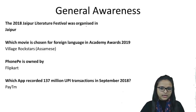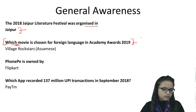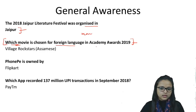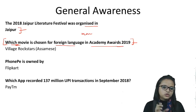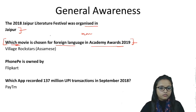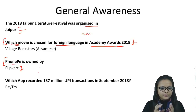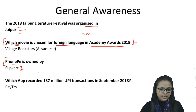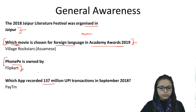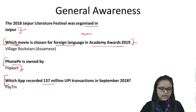Jaipur Literature Festival was organized in Jaipur. Which movie was chosen for the Foreign Language Movie category for the Academy Award 2019 — it was an Indian movie, 'The Village Rockstars', made in Assamese language. Who owns PhonePe? It is Flipkart — that was easy to answer. There was a question on which app is mostly used for UPI transactions. Based on newspaper data, 137 million UPI transactions were done through Paytm in September 2018, so the answer was Paytm.